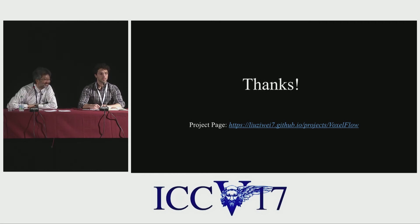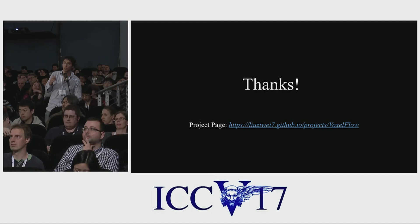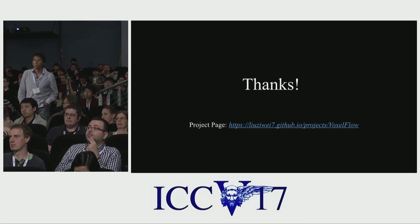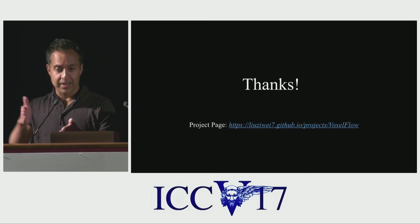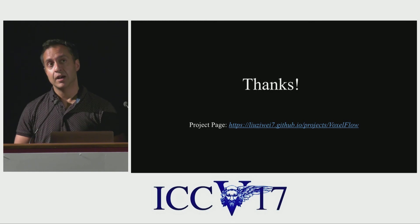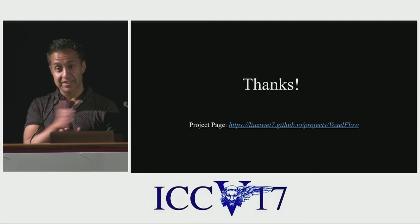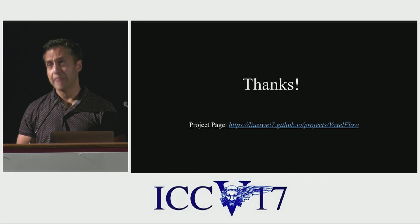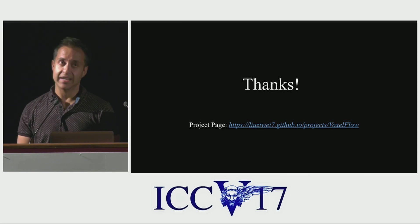A question about failure cases: on the project website we link to all those results. Where we have the worst trouble is with very repeating patterns, especially vertical railings. The method can choose the wrong interval of vertical railing, and you get flashing. We don't have a temporal coherence term, so it doesn't always choose between very similar patterns in a consistent way across time. Very strong patterns can introduce some flashing. Very large, very fast motions can also cause issues, though since the object is moving so fast your eye doesn't really pick it up on playback. The biggest artifact is vertical railings.